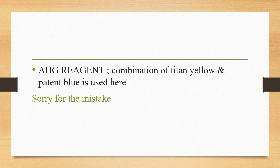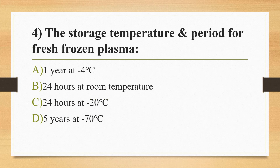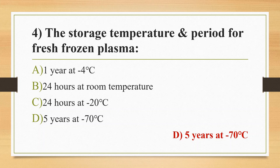Fourth question: the storage temperature and period for fresh frozen plasma. Option A: one year at minus 4 degrees Celsius. Option B: 24 hours at room temperature. Option C: 24 hours at minus 20 degrees Celsius. Option D: five years at minus 70 degrees Celsius. The answer is option D — five years at minus 70 degrees Celsius. FFP is fresh frozen plasma, which is the fluid portion of whole blood frozen within six hours. In a normal freezer, FFP is stored at minus 20 degrees Celsius for one year.